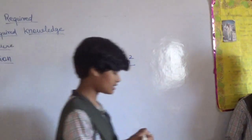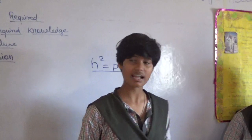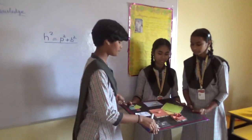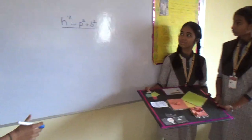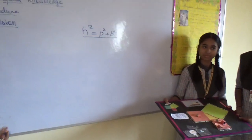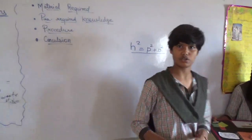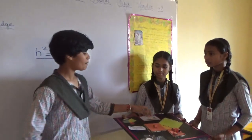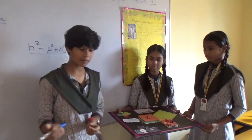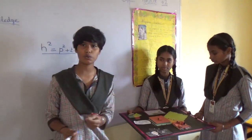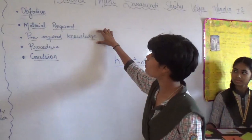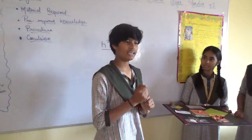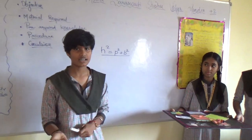We are here with some things. What is the objective? The objective is to prove the Pythagoras theorem. And what are the materials required? The sharp paper, some cardboard, scissor, glue, etc. What are the pre-required knowledge? We should have to know the area of a square and area of a right angle triangle.